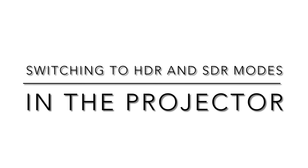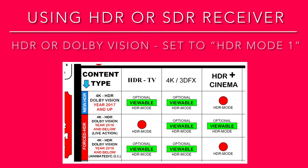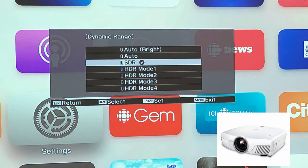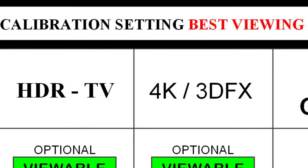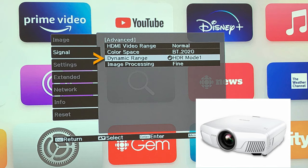Switching HDR and SDR mode in the projector. When using an HDR or SDR receiver and viewing HDR or Dolby Vision contents, set the projector to HDR mode 1. When viewing HDR or Dolby Vision contents listed in the POST-TECH method chart, the HDR mode means set the projector to HDR mode. Epson's HDR mode 1 preset is used as the base HDR mode for the 4 image calibration settings values of HDR TV, 4K 3D FX, HDR plus cinema, and HDR plus TV. The Epson 4010 Pro UHD projector's HDR mode must be set only to the preset HDR mode 1, which is the brightest preset HDR mode. For other projectors, use the brightest HDR mode.